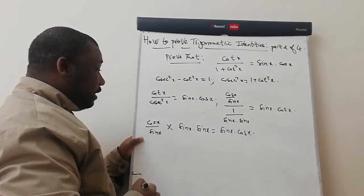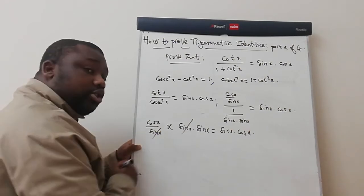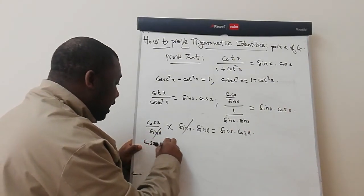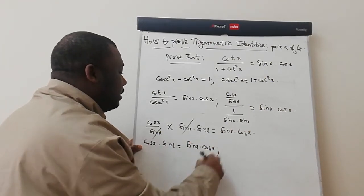From here, this is clearly visible that we can simplify the sign. We actually remain with cos x times sin x must be equal to sin x times cos x.